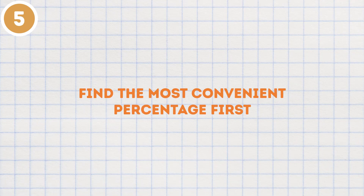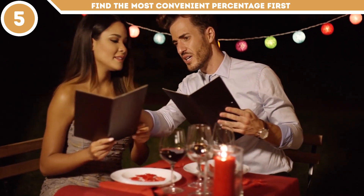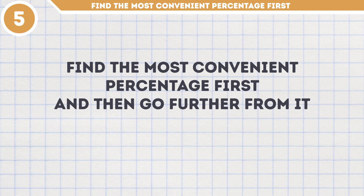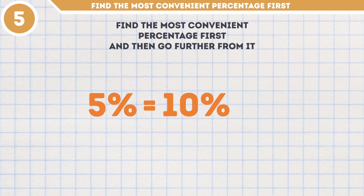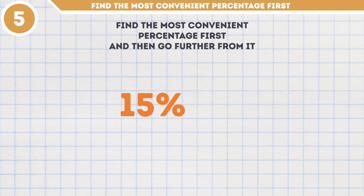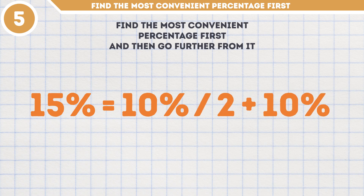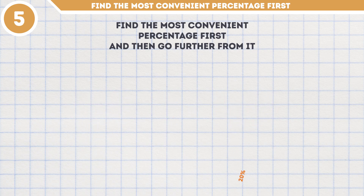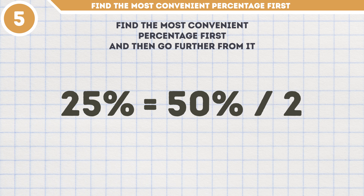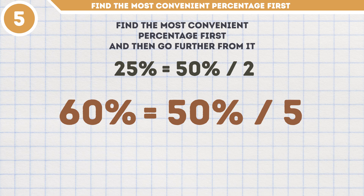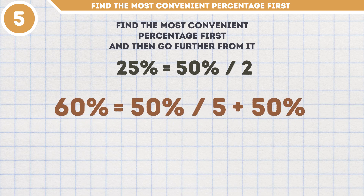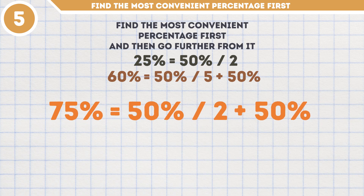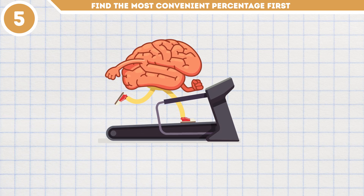Method number 5: Find the most convenient percentage first. Anytime you need to calculate something in your head, like the tip you should leave at a restaurant, find the most convenient percentage first and then go further from it. When you need 5% of something, find 10% instead and split the result in half. This trick works with 15% too — find 10%, halve it, and add that half to the result. For 20%, just double the 10%. For 25%, find 50% and divide it by 2. For 60%, find 50%, divide by 5 to get 10%, and add that to the initial 50%. For 75%, find 50%, halve it, and add the half to that 50%.